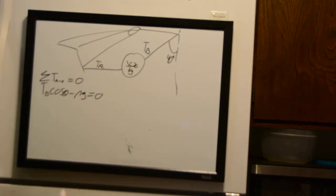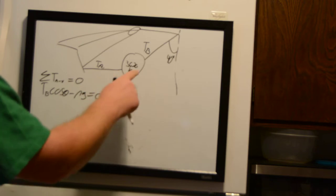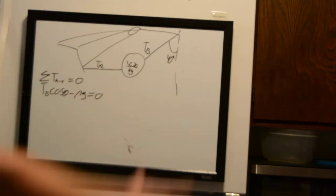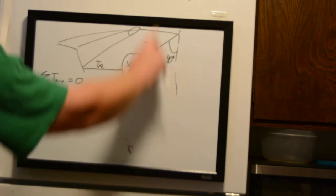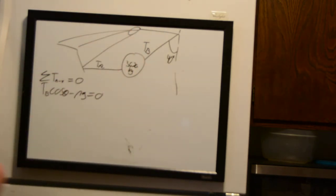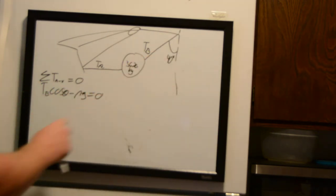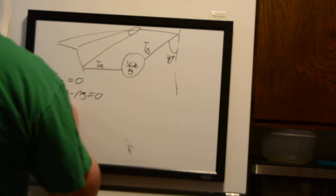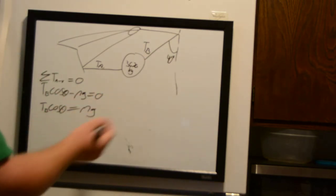Minus our mass times gravity equals zero, because that's the acceleration of gravity pulling the ball down, which equals the tension forces pulling it up. That's Newton's third law: for every action there's an equal and opposite reaction. The action is gravity pulling the ball down; the reaction is the rope pulling it up, which is the tension on rope B.